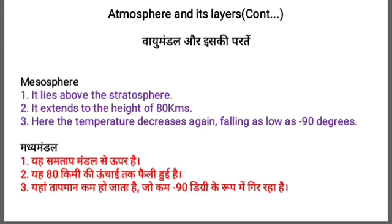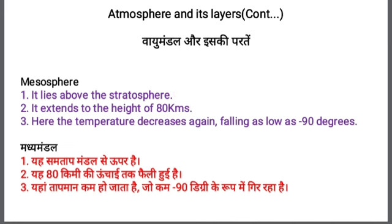The first layer after stratosphere is the mesosphere. It lies above the stratosphere. The stratosphere ends at the stratopause, and after that the layer that starts is the mesosphere. It extends to a height of 80 kilometers.